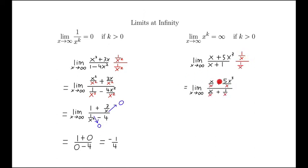We distribute the 1 over x through. The x over x will cancel out to be 1. The x cubed over x will cancel out to be x squared. And we'll just be left with 1 plus 5x squared over 1 plus 1 over x.